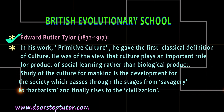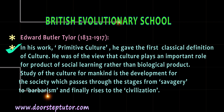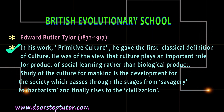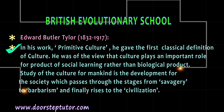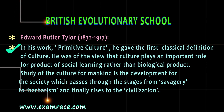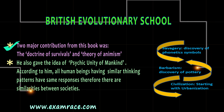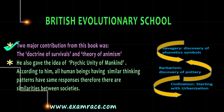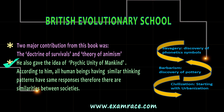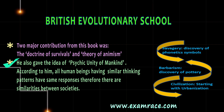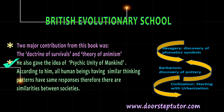Edward Butler Taylor, in his work Primitive Culture, gave the first classical definition of culture. He was of the view that culture plays an important role as a product of social learning rather than a biological product. For mankind, the development of society passes through the stages of savagery to barbarism and finally rises to civilization. Two major contributions from this book were the doctrine of survivals and the theory of animism. He also gave the idea of psychic unity of mankind. According to him, all human beings having similar thinking patterns have the same responses; therefore, there are similarities between societies.